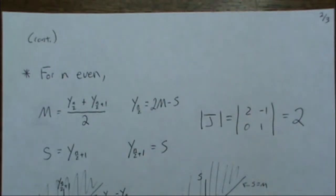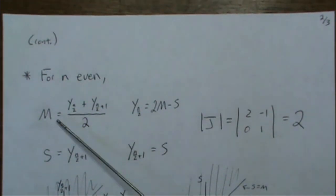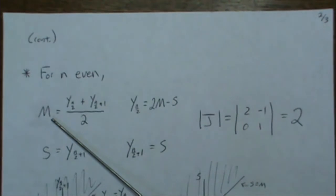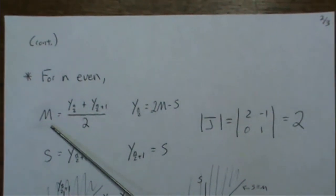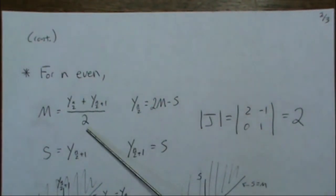For n even, there isn't a middle value, so we have to take the average of the middle two values. And then in order to do that, we need to set up a mapping. So M, which is what we're interested in, the median of these two middle values.